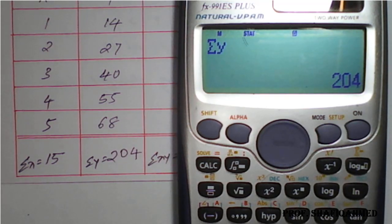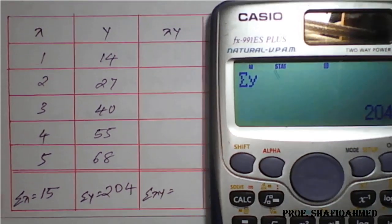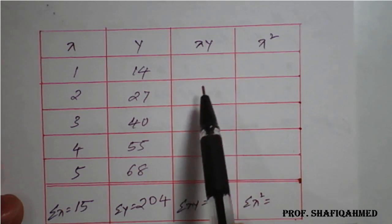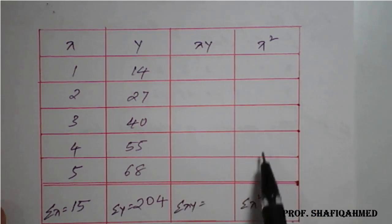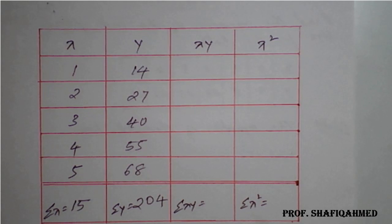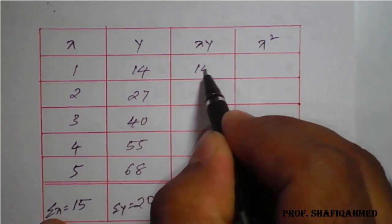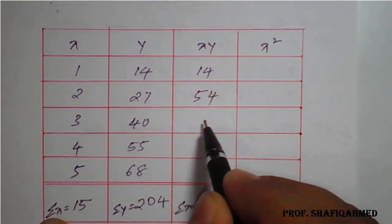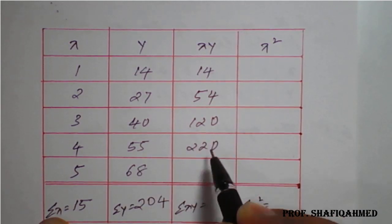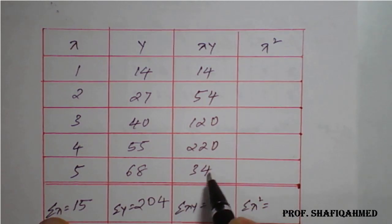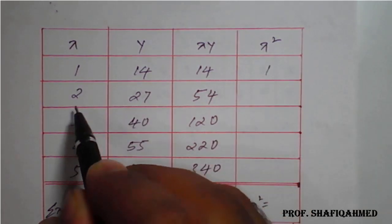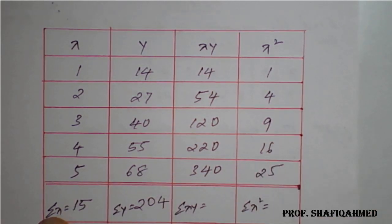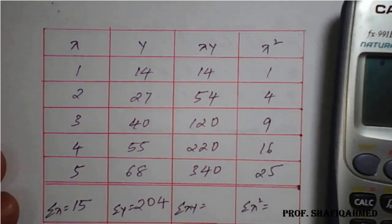Now for the manual calculation: compute XY values — 1×14=14, 2×27=54, 3×40=120, 4×55=220, 5×68=340. For X² values: 1²=1, 2²=4, 3²=9, 4²=16, 5²=25.